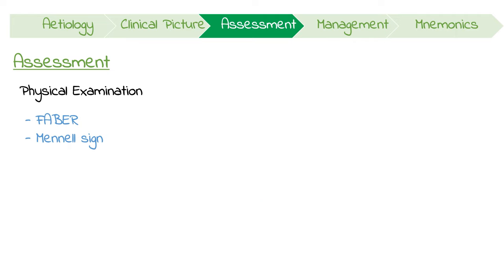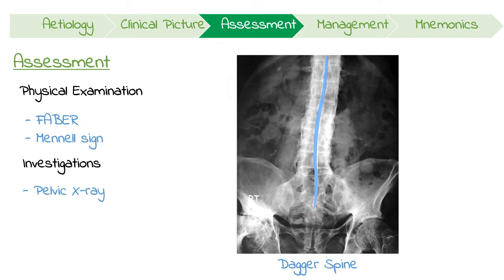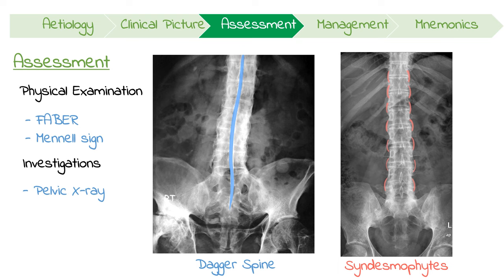The most important initial investigation is an anteroposterior pelvic X-ray. One classic feature to look for is the dagger sign, which is a single central radiodense line caused by ossification of the supraspinous and interspinous ligaments, secondary to enthesitis. Another feature is the formation of syndesmophytes, which are paravertebral ossifications running parallel to the spine. This, along with the squaring of vertebral bodies, gives the impression of a bamboo spine, which is a pathognomonic radiographic feature only seen in ankylosing spondylitis.